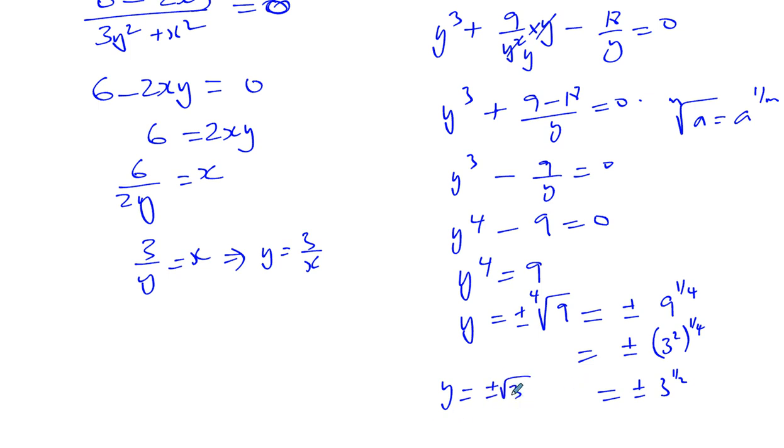So that's the y coordinates. There's two coordinates: y equals root 3 and y equals negative root 3. Now we know that x equals 3 over y.